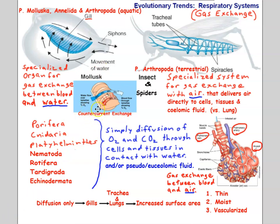This is also a good place to introduce counter-current exchange, seen in fish gills. Water passes over the gill in one direction while blood flows through the gill filaments in the opposite direction. That counter-current arrangement increases the efficiency of gas exchange between the blood and the water — necessary because water doesn't carry as much oxygen as air.